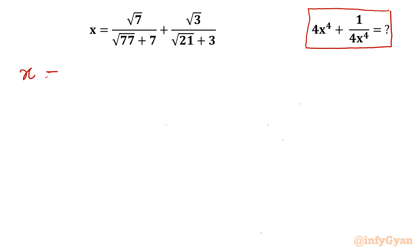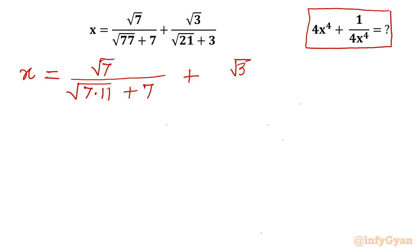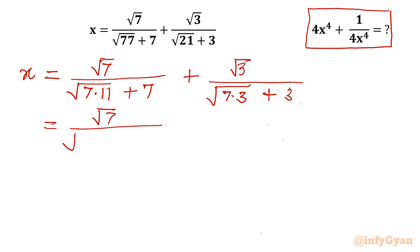Let's get started by considering x equal to square root 7 over square root 77, where 77 is 7 times 11, plus 7, plus square root 3 over 21, which we can write as 7 times 3, plus 3. Now I can write this using the property that square root of AB equals square root A times square root B.